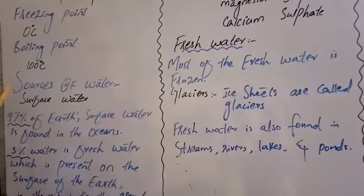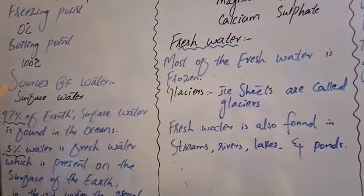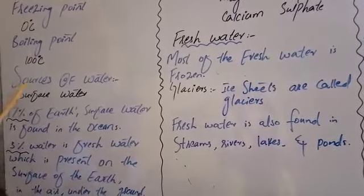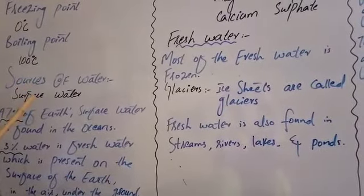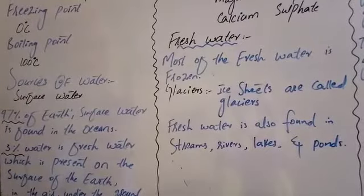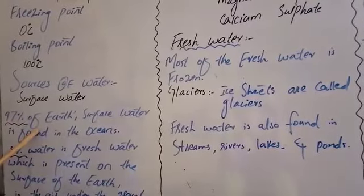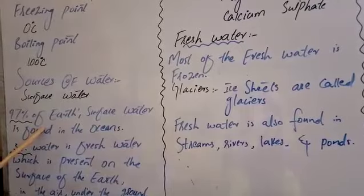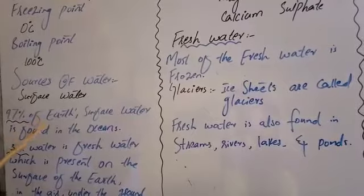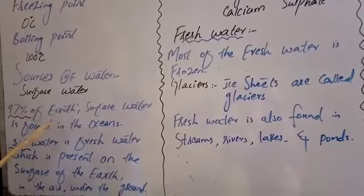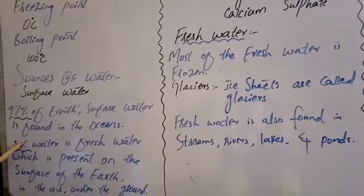Water is present not only on the surface but also beneath the surface of the earth. About 97% of earth's water is found in the oceans — it is salty water. Only 3% of the water is fresh water, which is present on the surface of the earth, in the air, and underground.